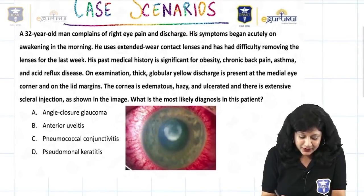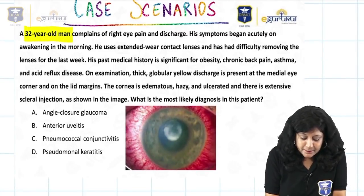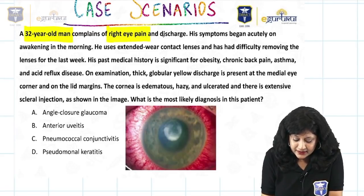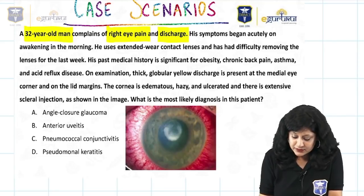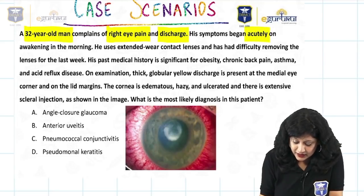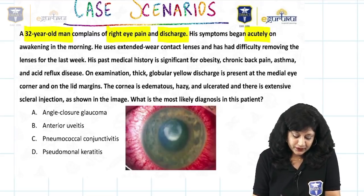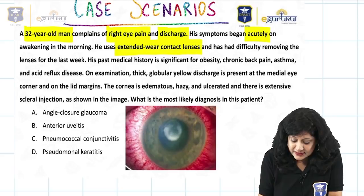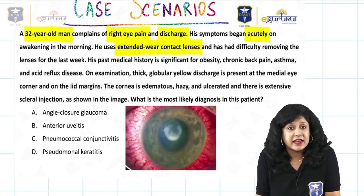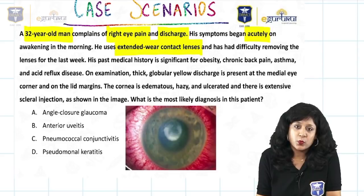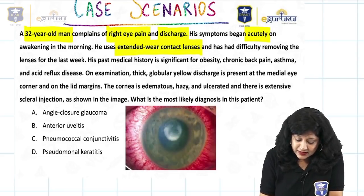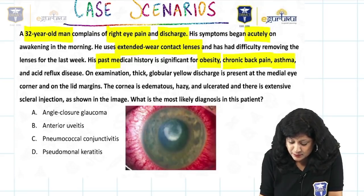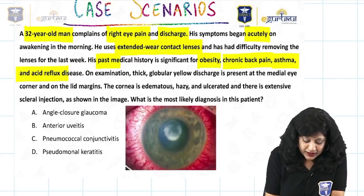Look at the question. We have a 32-year-old man complaining of right eye pain and discharge. His symptoms began acutely on awakening in the morning. He uses extended wear contact lenses and has had difficulty removing the lenses the last week. His past medical history is significant for obesity, chronic back pain, asthma, and acid reflux disease.